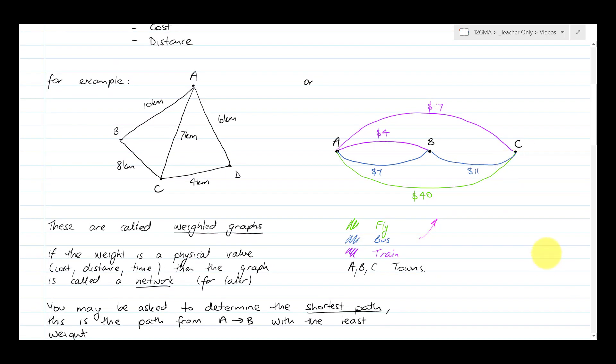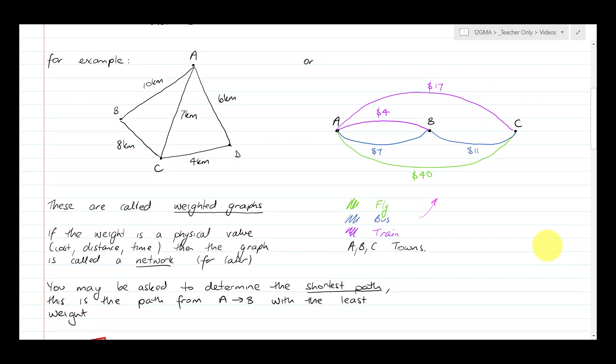They're weighted graphs because each edge has got a weighting. And then the graph is also often called a network, so just keep that in mind as well. The word graph and network is a little bit interchangeable but does have a very specific meaning.